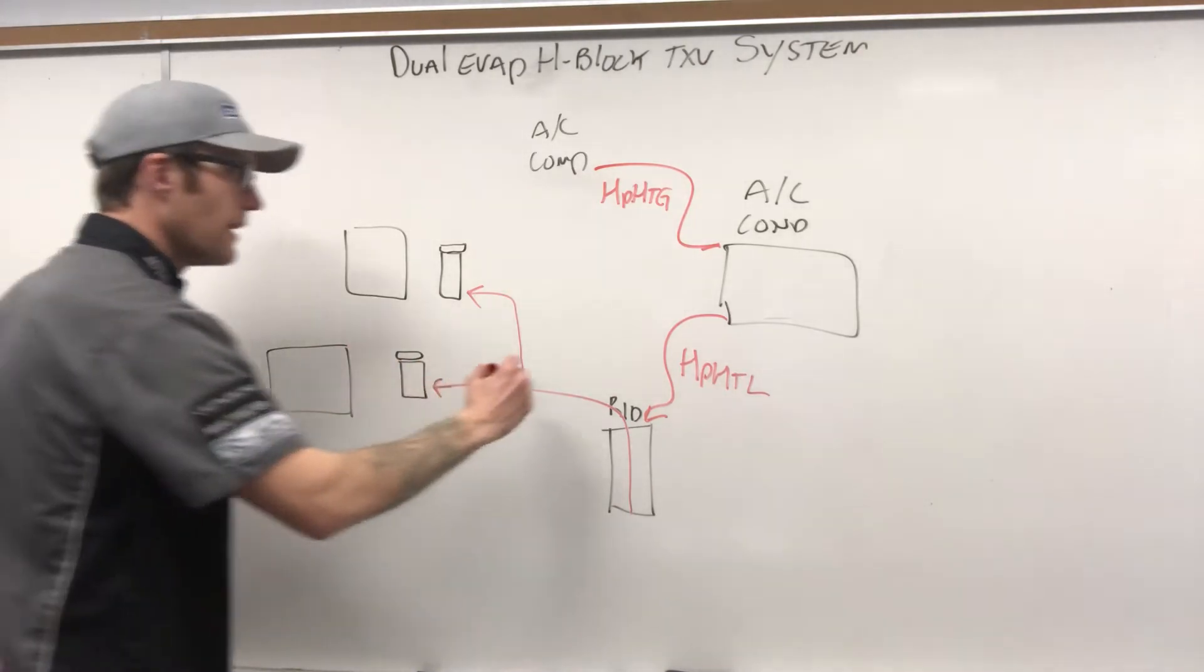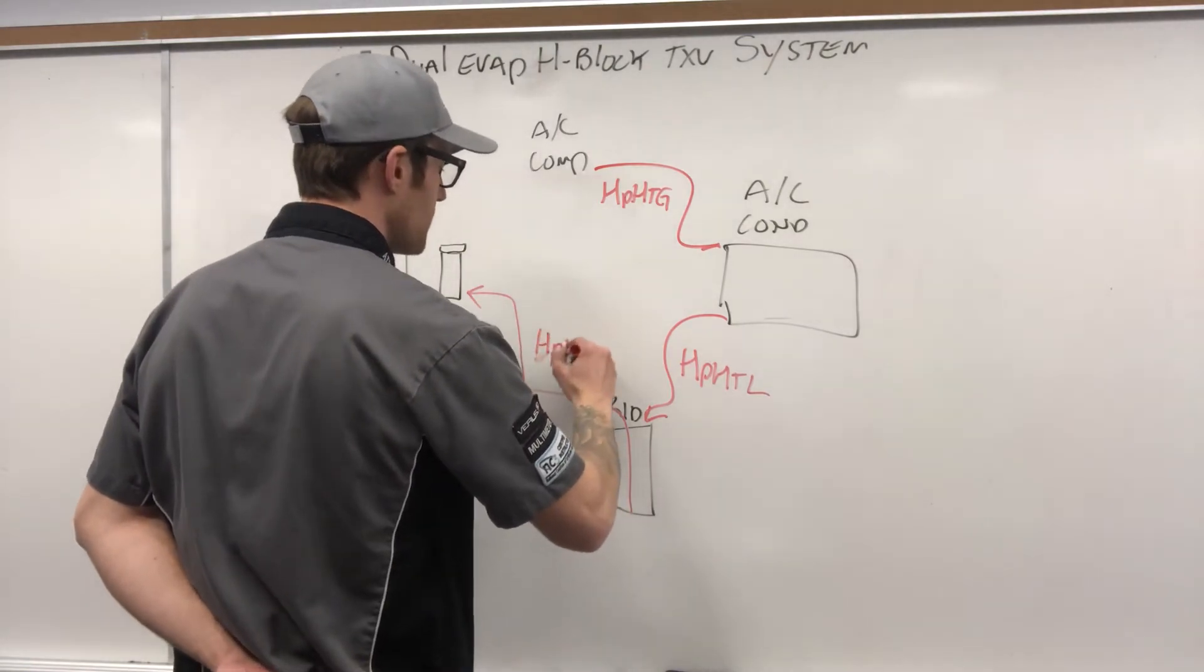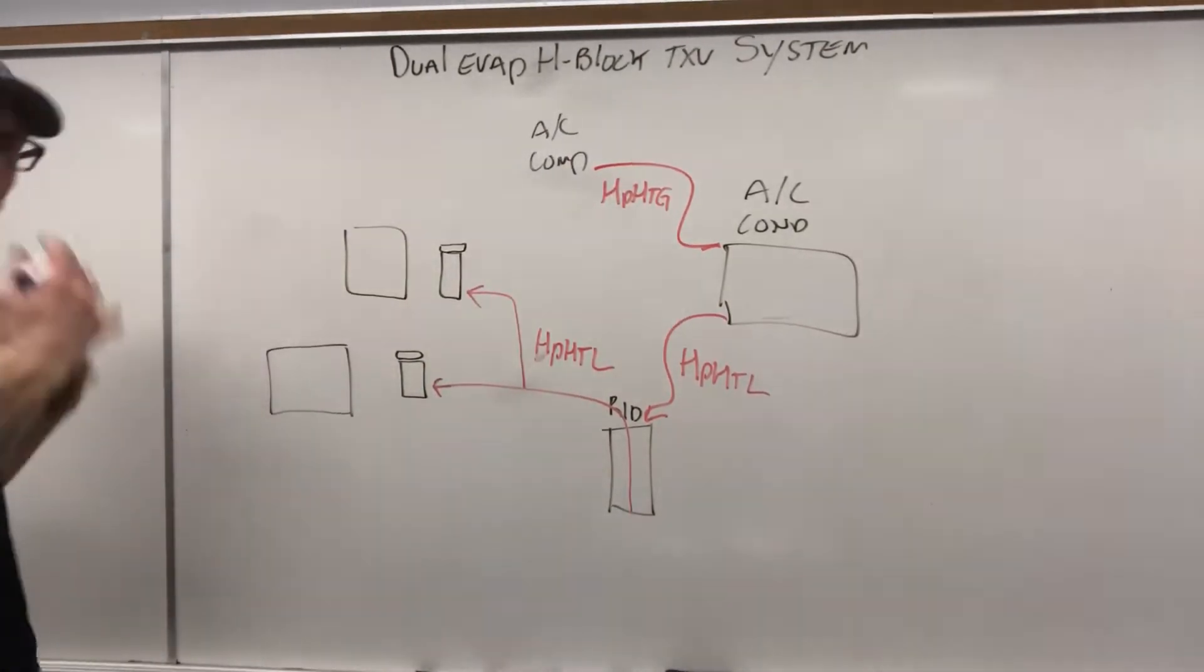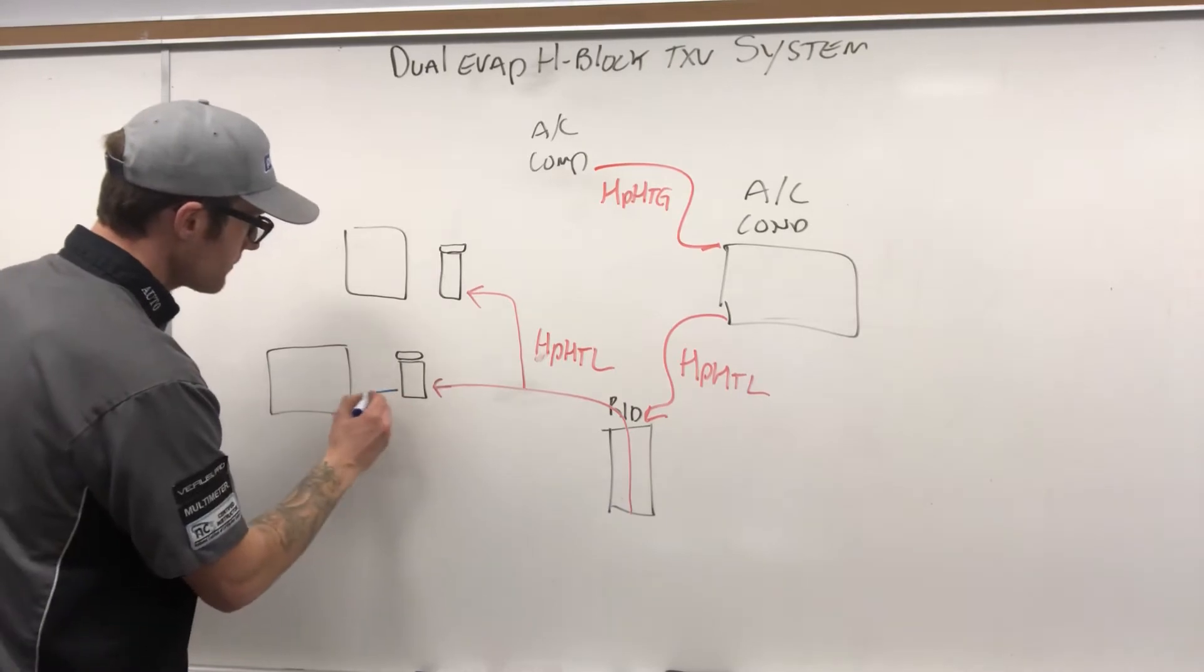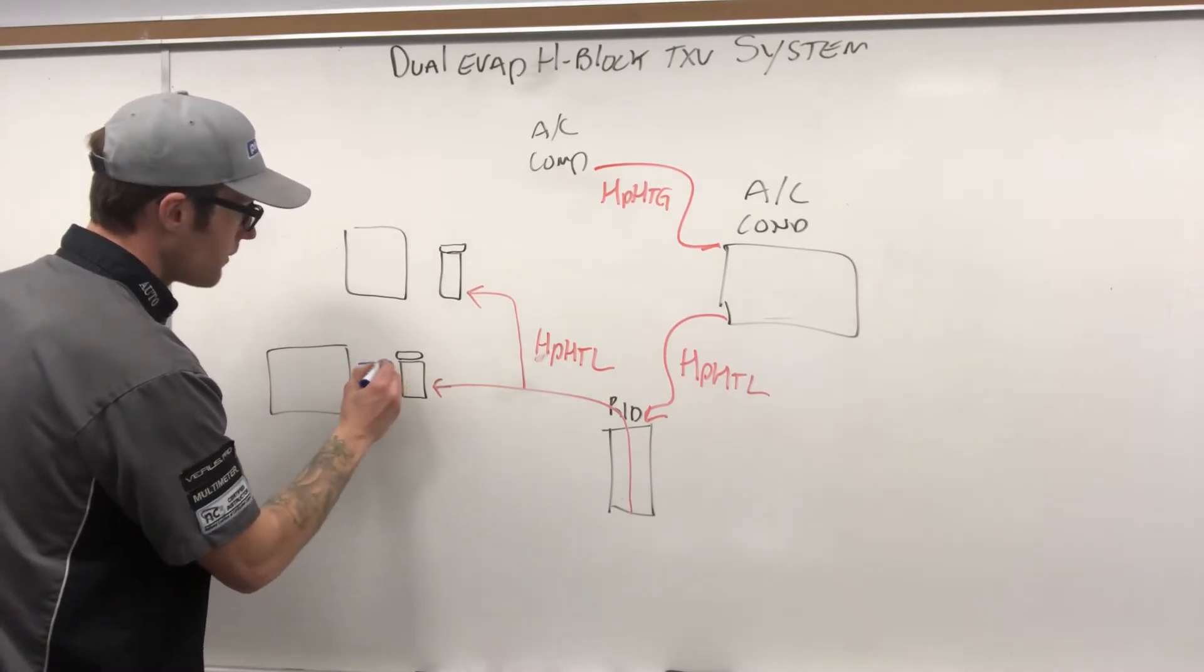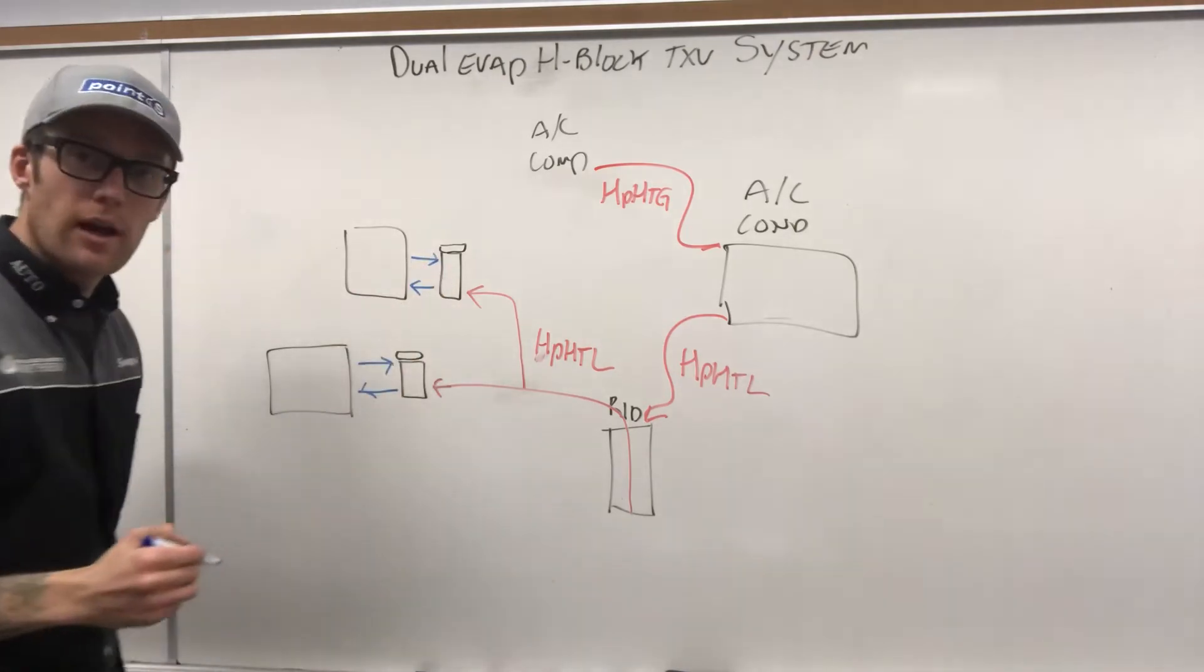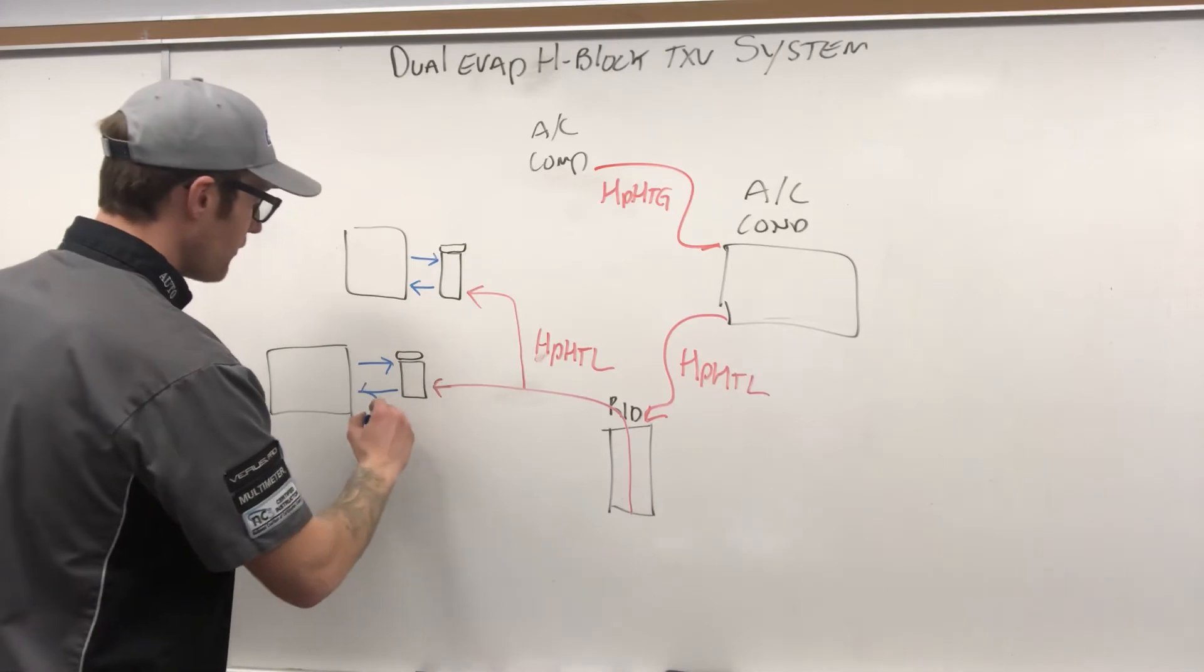So now that we've done that, we are still high pressure, high temperature liquid. Now what we're going to do is we're going to slowly meter that in. Crayons are important when you guys are doing this. We have low pressure, low temperature liquid.